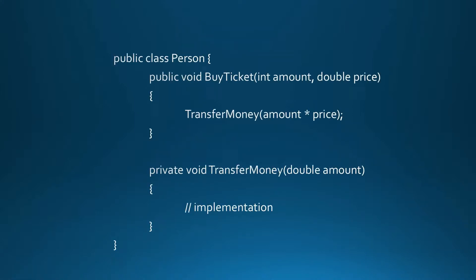To hide internal functionality of an object we use private methods. They can be invoked only by other methods, including public methods, contained inside the class. The TransferMoney method is private, so it can only be invoked from within the class and only in specific scenarios. This ensures that it wouldn't be invoked from the outside of the class.